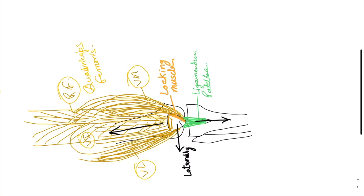For side determination of the patella in a viva exam, hold the patella with the anterior surface placed anteriorly, articular surface posteriorly, base above and apex below — then place it on the table. The side to which the patella falls is the side to which it belongs. So patella has a natural tendency to get dislocated laterally — answer: laterally.